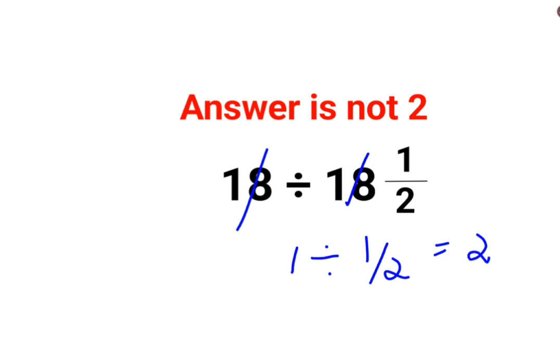That my dear friends is incorrect. The reason for that is nowhere, nowhere this means 18 multiplied by 1 by 2. Only then the operation which we did was correct. Otherwise, actually this means 18 plus 1 by 2.